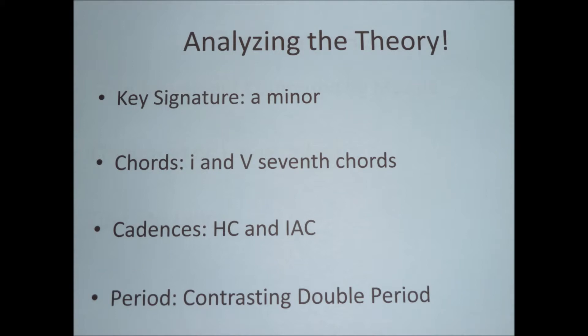The key signature of the first half of this movement is predominantly A minor. The majority of the chords are seventh chords involving several minor one and five chords. This movement does include some minor four chords and major three chords in the first half, but the majority revolve around the minor one-seventh chord as well as the dominant five-seventh chord. There are some inversions involved, but for the majority they are in root position.